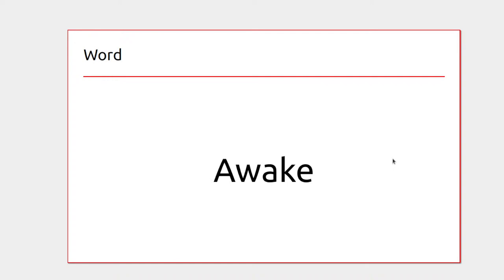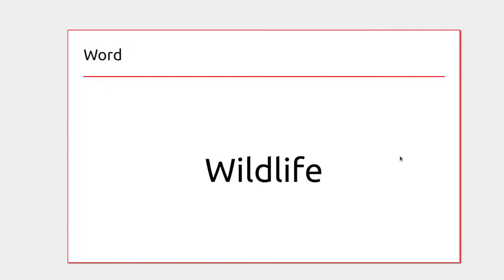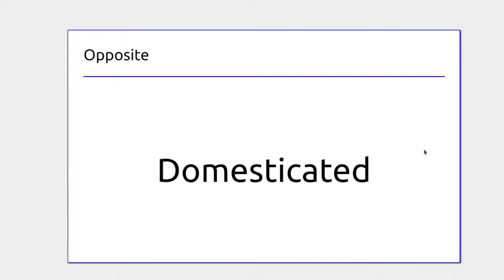Once fully rested you get awake again. Wildlife are animals not living near humans — a polar bear or a whale out in the ocean, for example. Domesticated animals like cats and dogs are pets. Farm animals and horses are somewhere in the middle, used to being around humans.